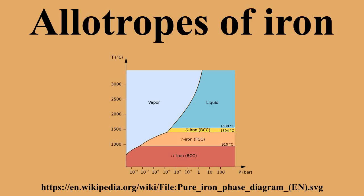Epsilon iron (hexaferrum): At pressures above approximately 10 gigapascals and temperatures of a few hundred Kelvin or less, alpha iron changes into a hexagonal close-packed structure, which is also known as epsilon iron or hexaferrum. The high-temperature gamma phase also changes into epsilon iron, but does so at high pressure. Anti-ferromagnetism in alloys of epsilon-iron with MnOs and Ru has been observed.